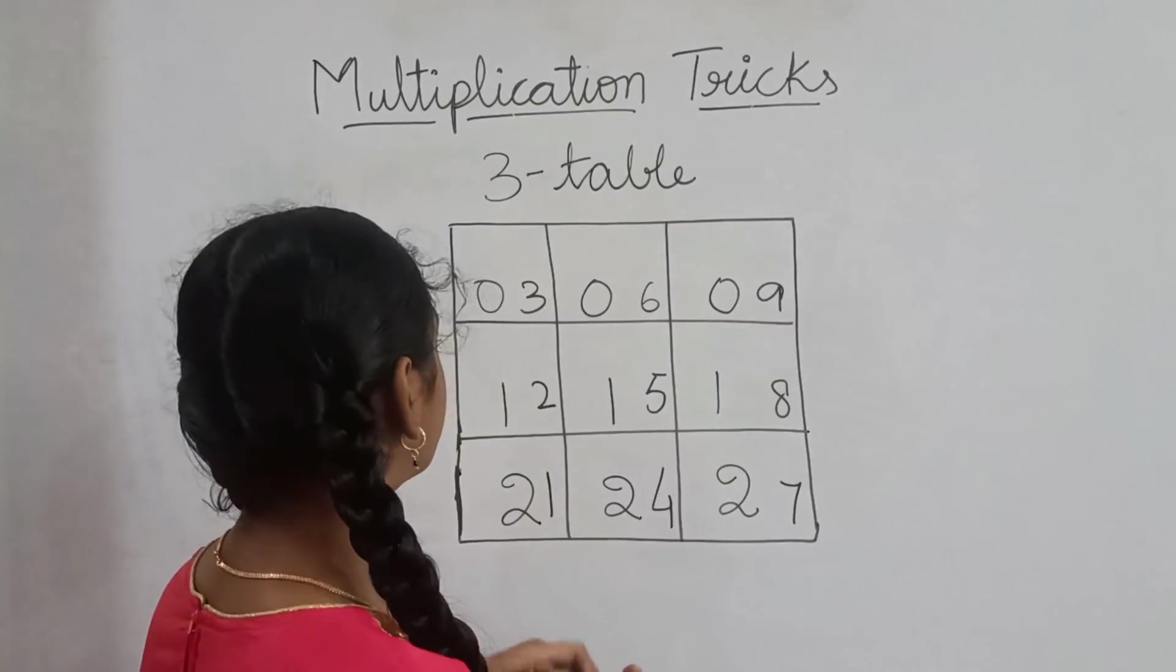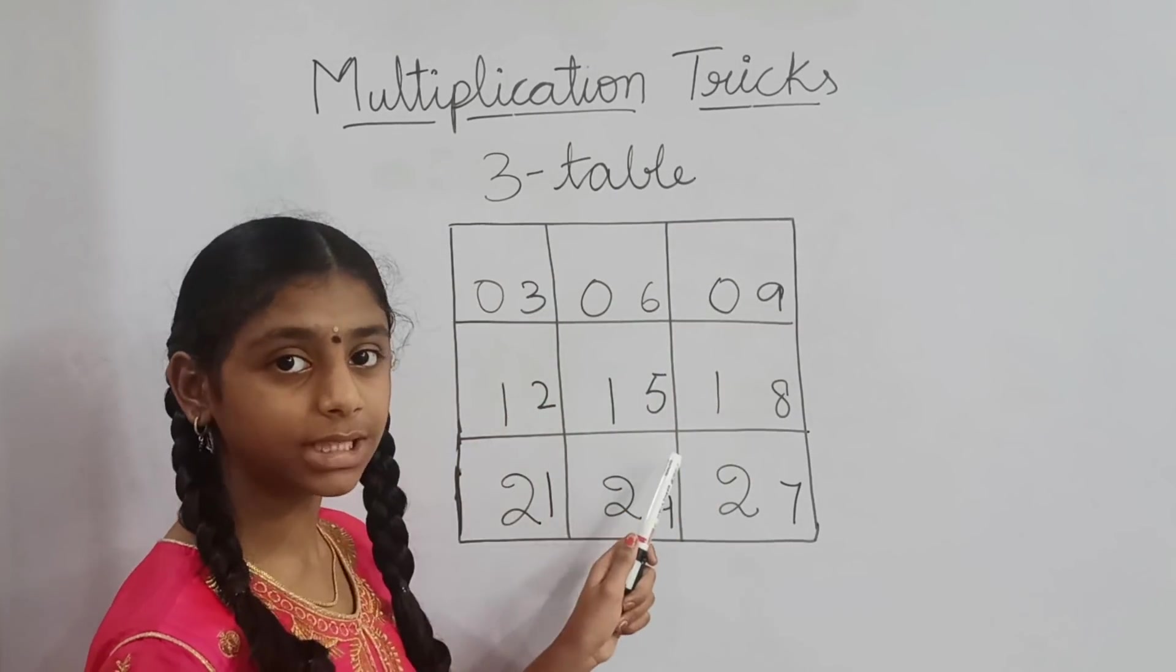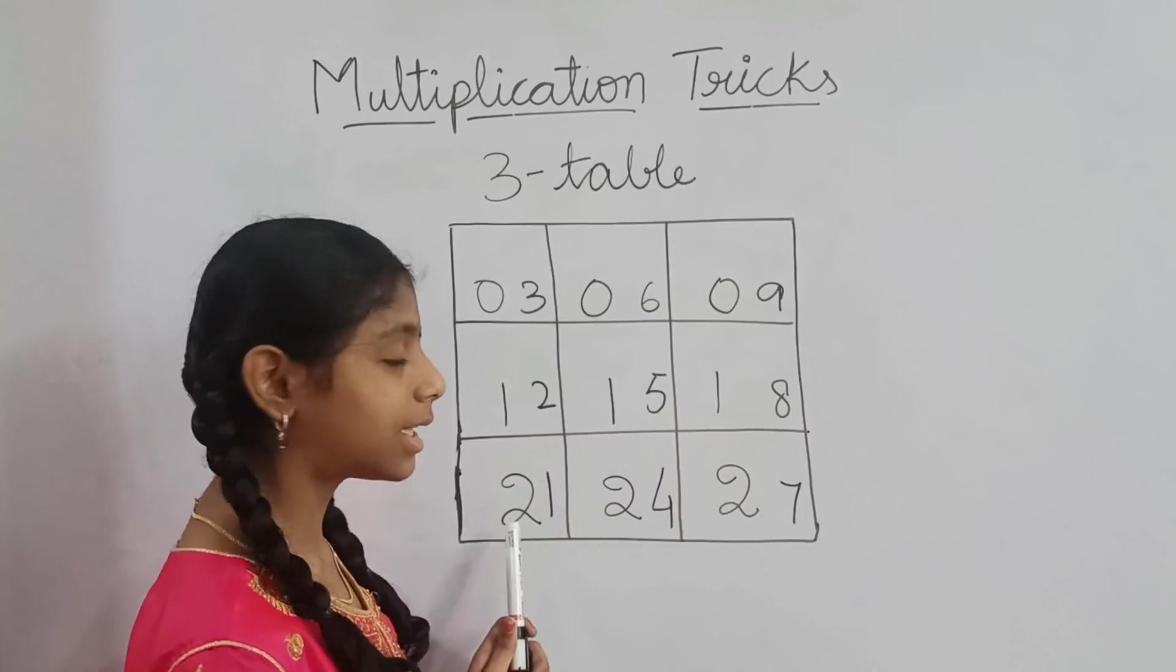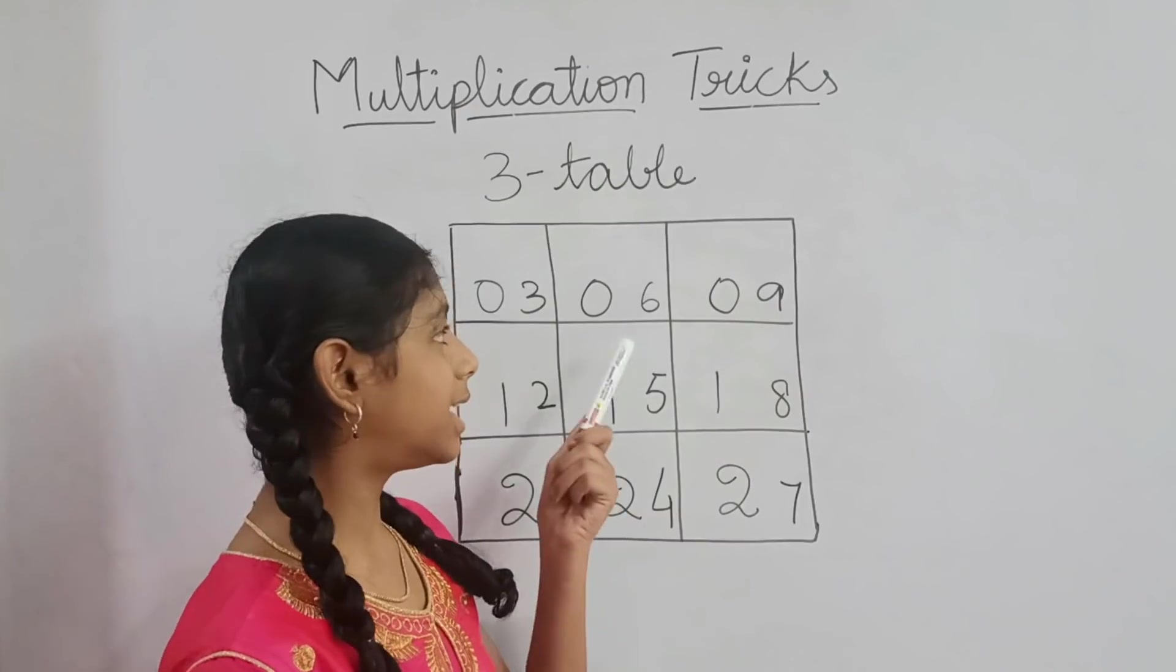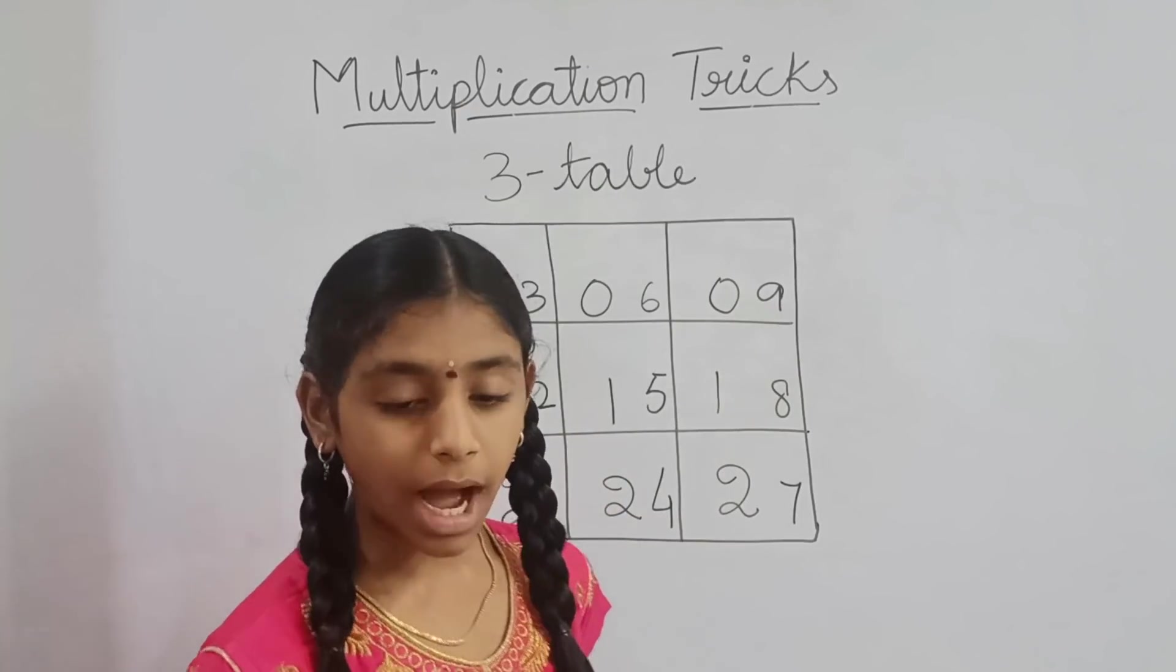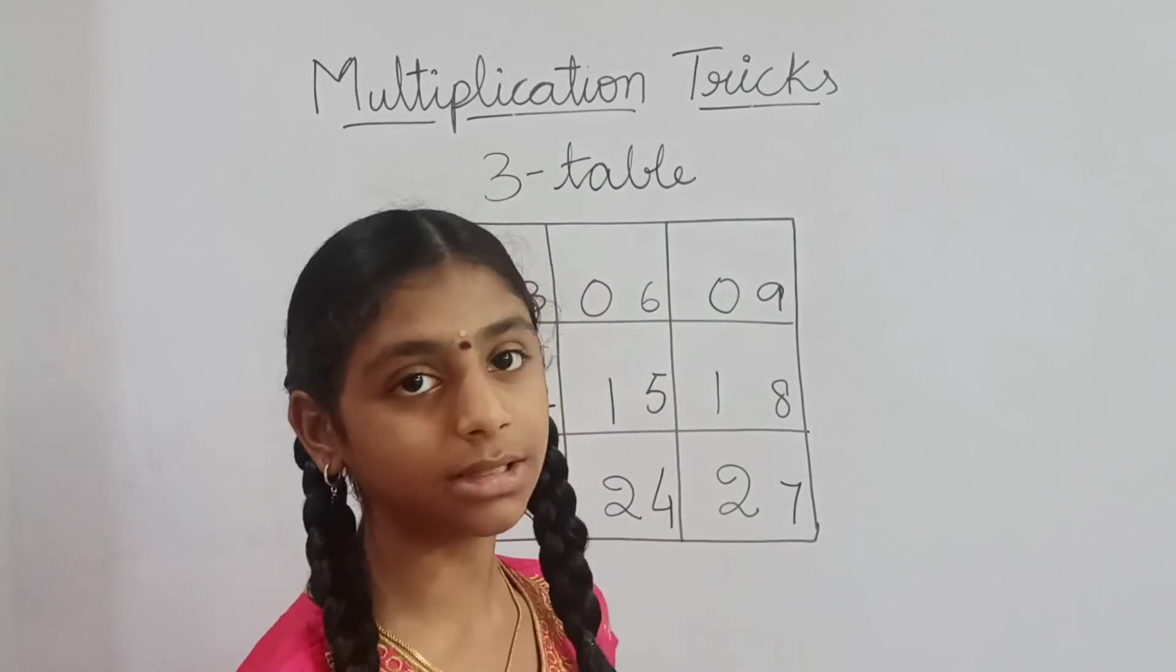Look here. 3×1 is 3, 3×2 is 6, 3×3 is 9, 3×4 is 12, 3×5 is 15, 3×6 is 18, 3×7 is 21, 3×8 is 24, 3×9 is 27. We know 3×10 is 30. Our 3 table is very easy if you use this method.